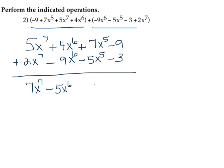Next we have a positive 7x to the fifth and a negative 5x to the fifth. The signs are different, so we subtract, we get 2, and it's positive since the 7 has a larger absolute value. So plus 2x to the fifth. Then these last numbers are both negative, so we need to add them. When we add 9 and 3 we get 12, and since they're both negative we keep the negative sign, so minus 12.